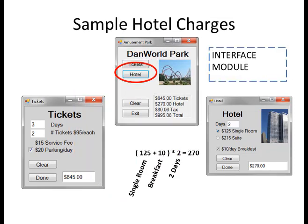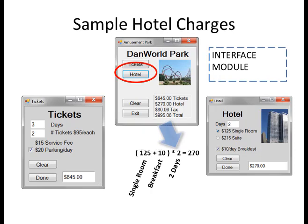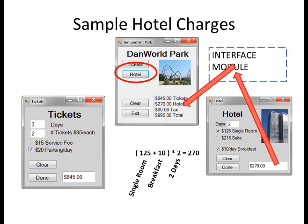So how does hotel work? For the hotel I have a single room and breakfast. It's $125 plus $10, so that's $135 multiplied by 2 because I'm staying for two days. The $270 is stored in the interface module, which can be read by the main program when it's time to update the summary of all the charges.